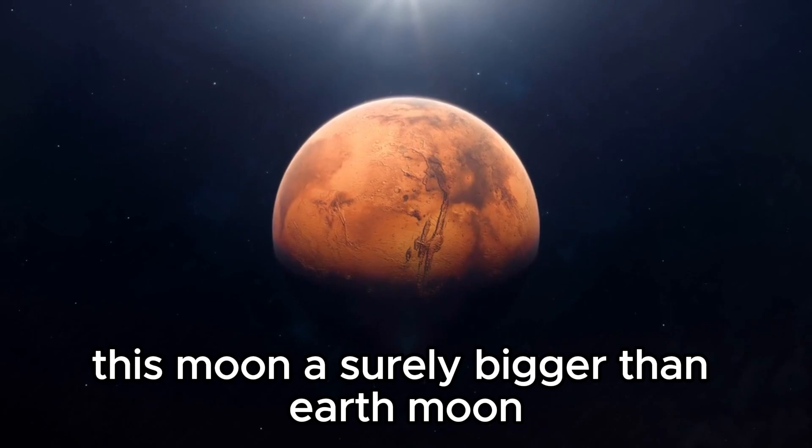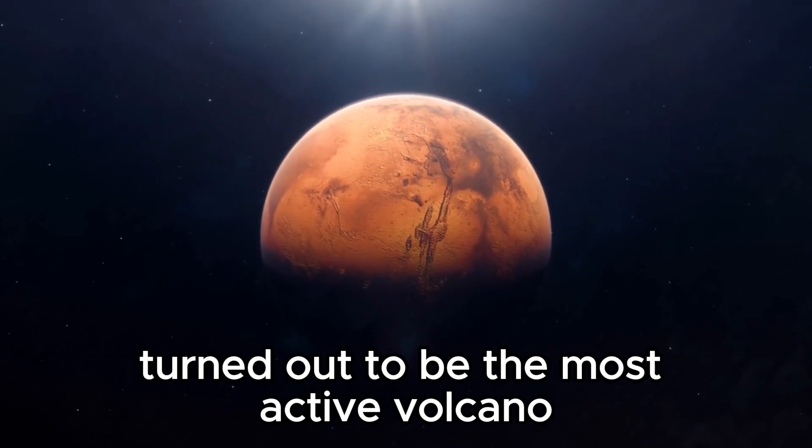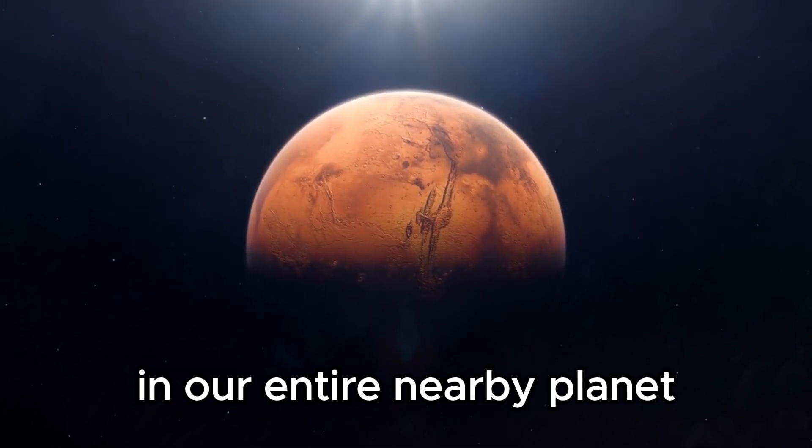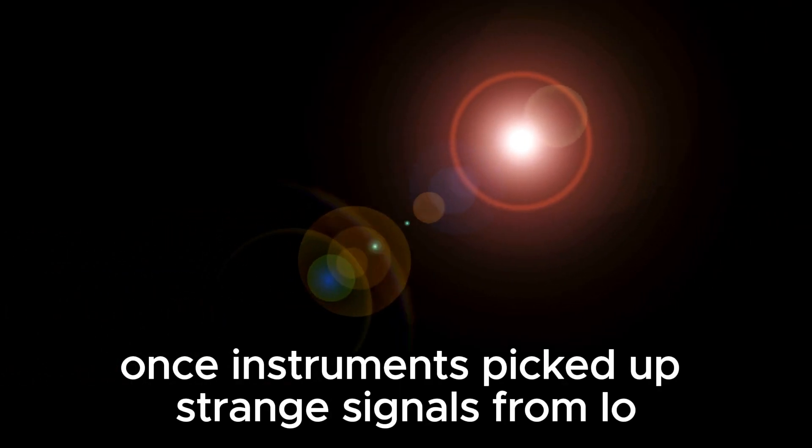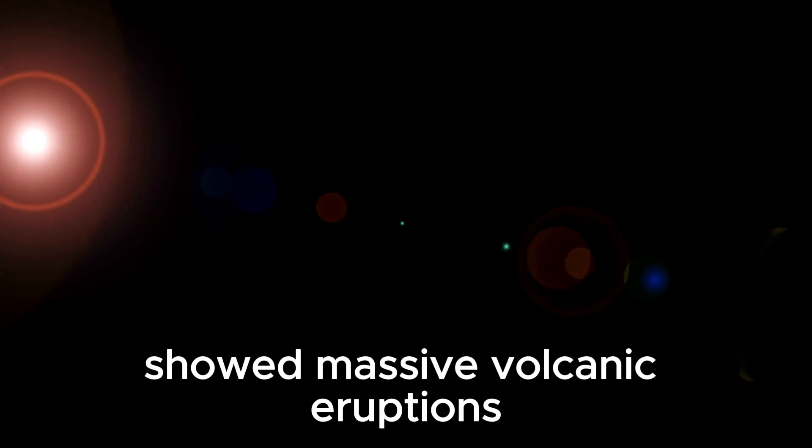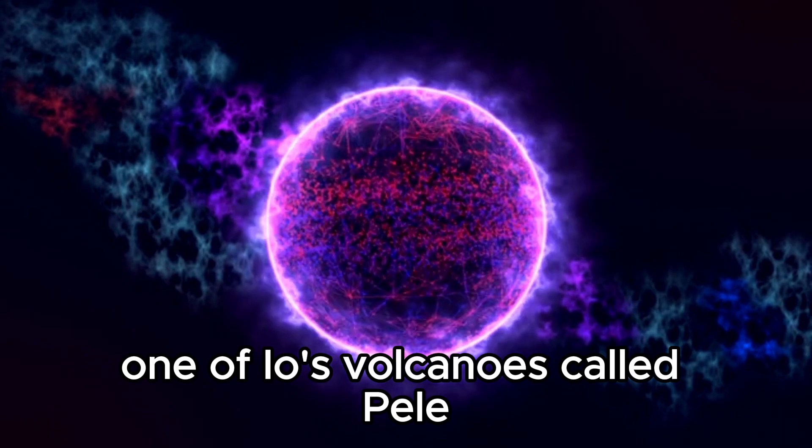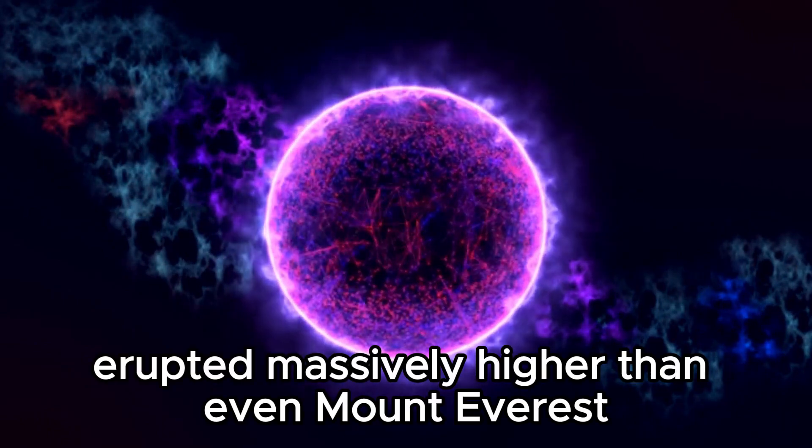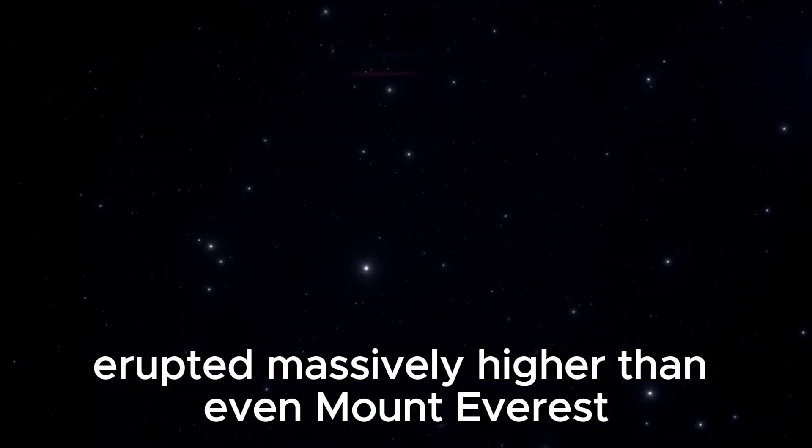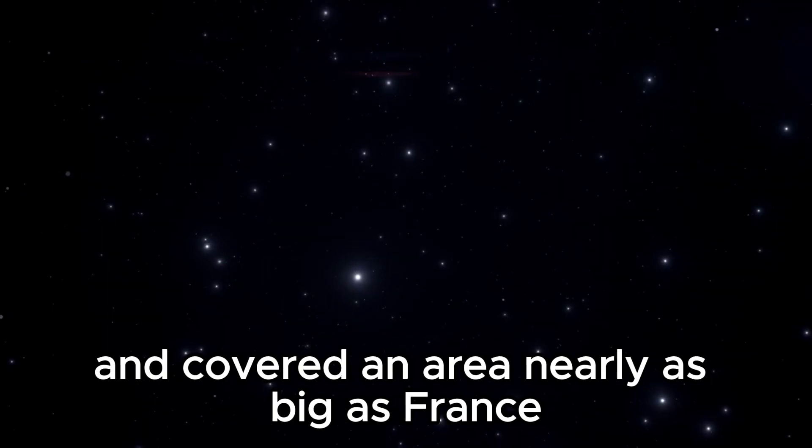This moon, assuredly bigger than Earth's moon, turned out to be the most active volcano in our entire nearby planet group. Explorer 1's instruments picked up strange signals from Io, and the pictures they took showed massive volcanic eruptions and stuff flying out into space. One of Io's volcanoes, called Pele, erupted massively, higher than even Mount Everest, and covered an area nearly as big as France.